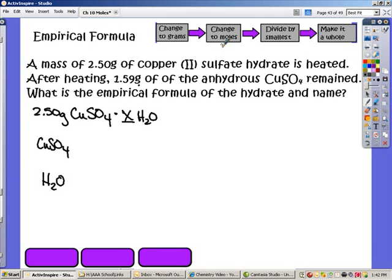It says change it to moles. So do I have the number of grams for just the copper sulfate without any water? And the answer to that is yes. So I have the anhydrous copper sulfate here. That is the copper sulfate without any water. And I have 1.59 grams of that, of the copper sulfate. So I'm going to take this and I'm going to change it to moles.